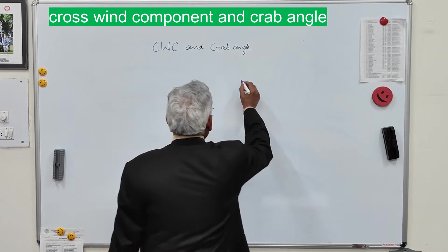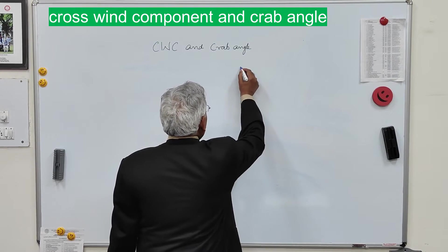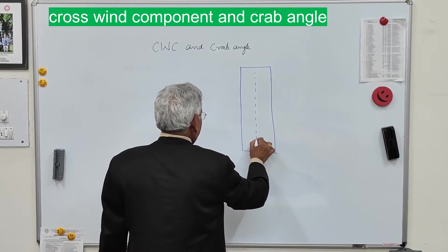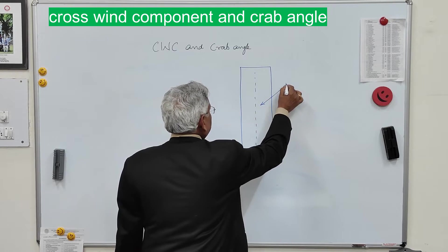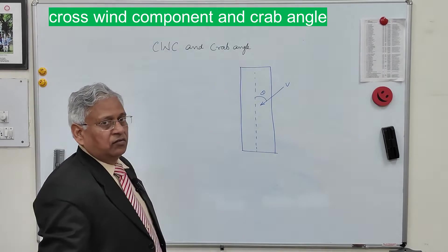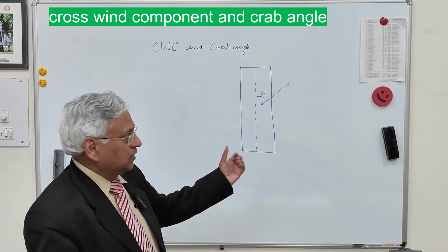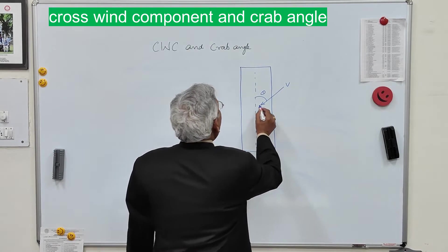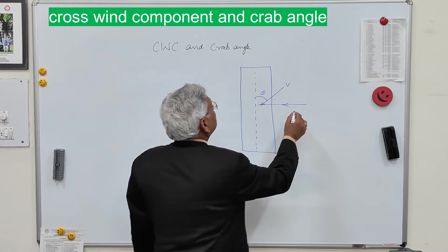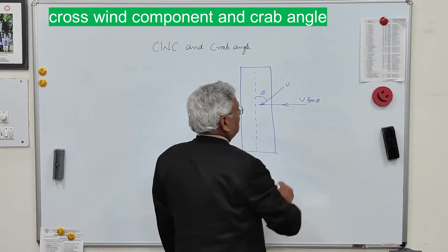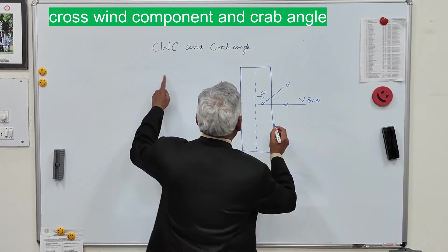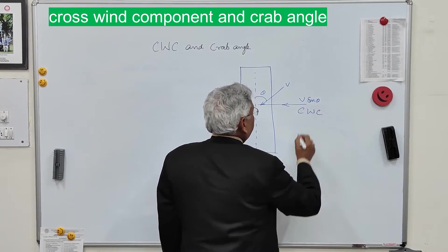When the wind is blowing at some angle with the center line of the runway — let us say theta — with velocity V, there will be a component of this wind which is perpendicular to the center line of the runway, and this component is V sin theta.